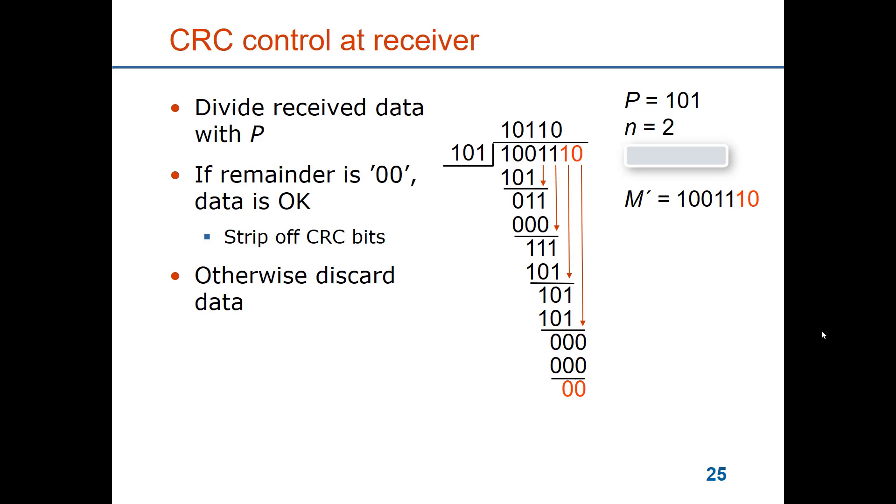If you would get a remainder which is different from zero in any one of the two bits then you know that there has been an error. You cannot say what type of error it is and therefore you have to discard the data.